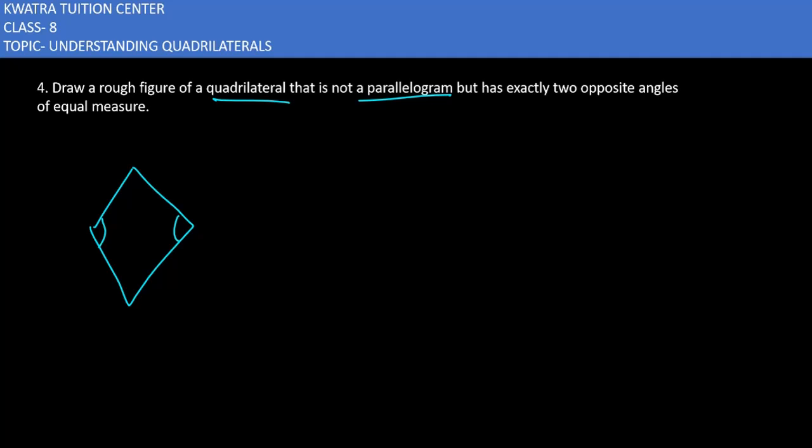In a kite, these two angles are equal. Let's say I am marking it as B and D. They are equal, but A and C are not equal.